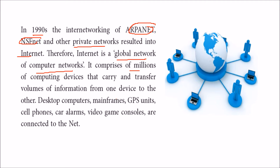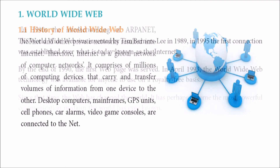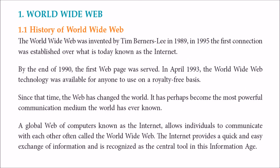The internet can be described as a global network of computer networks. It comprises millions of computing devices carrying and transferring information — desktop computers, mainframes, GPS units, cell phones, car alarms, video game consoles — all connected to the internet. Now, what is the World Wide Web? The WWW was invented by Tim Berners-Lee in 1989.